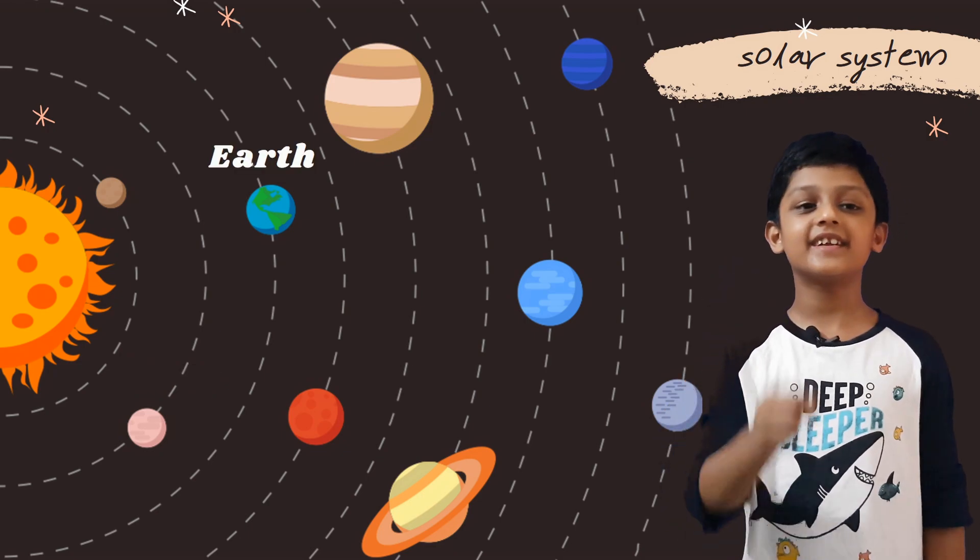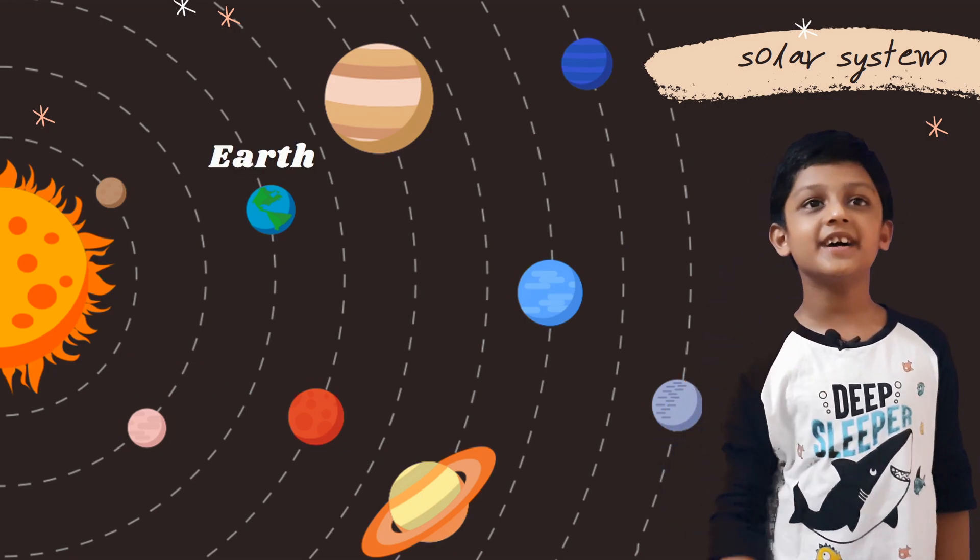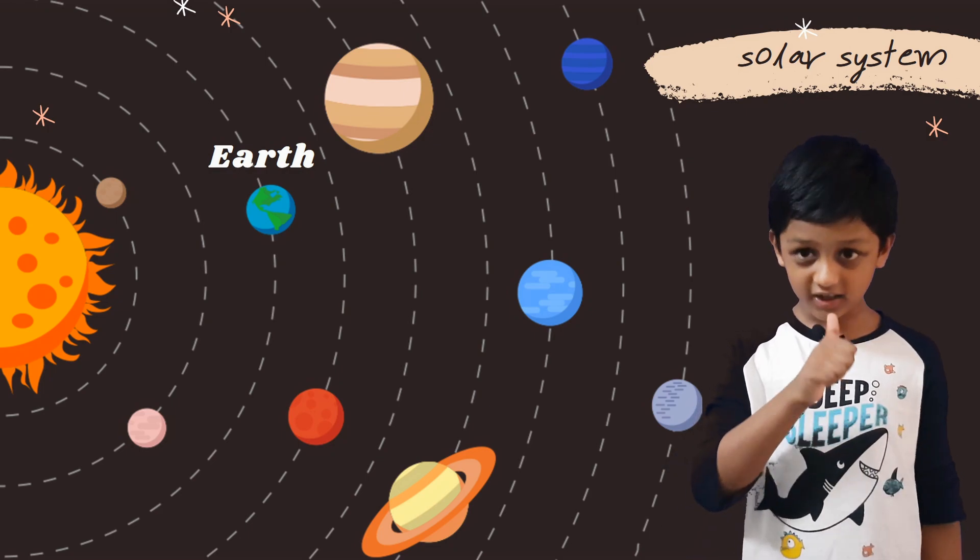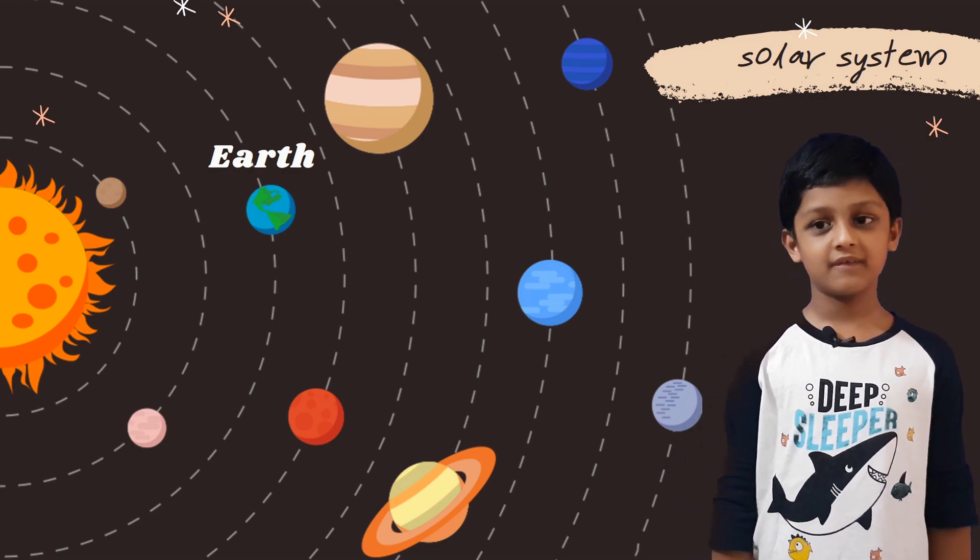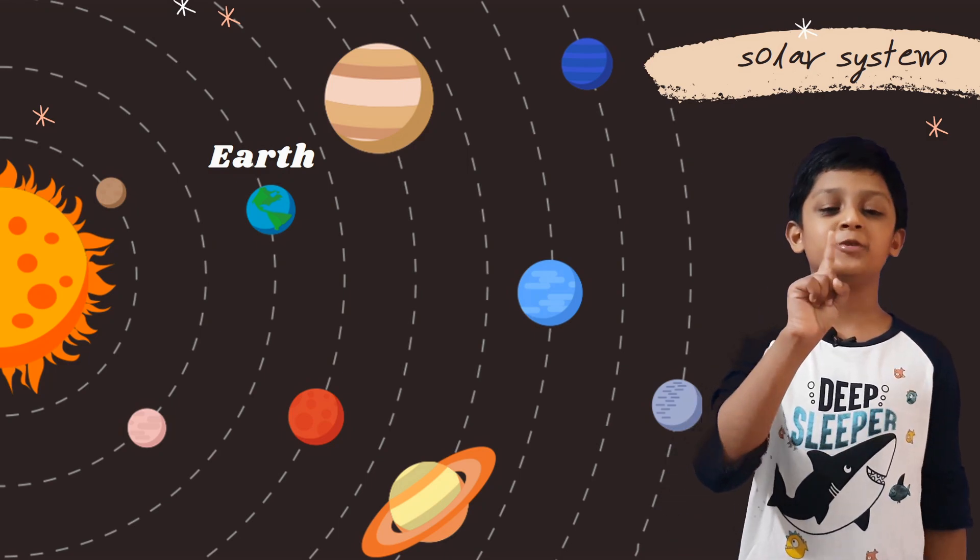Earth, it is the third planet from the sun. It has water, oxygen and life. And it has one moon.